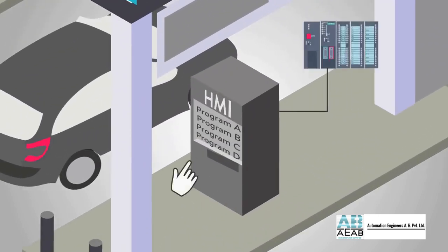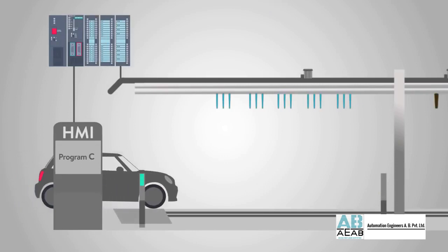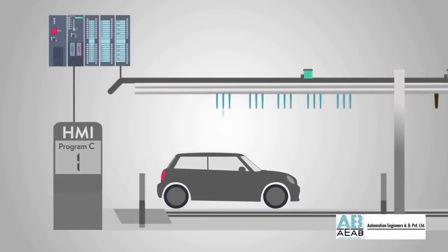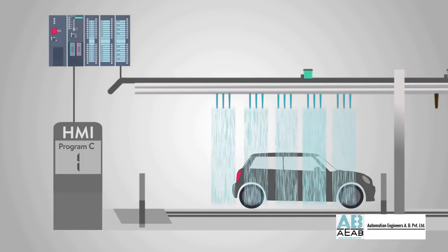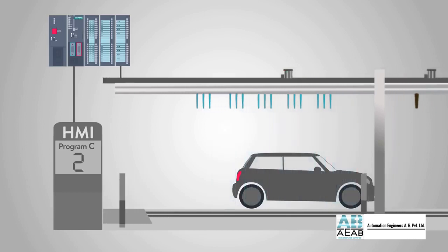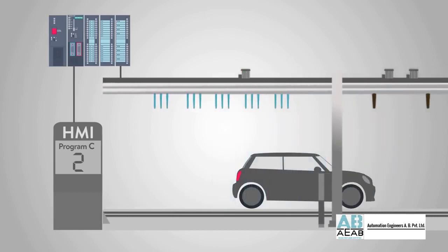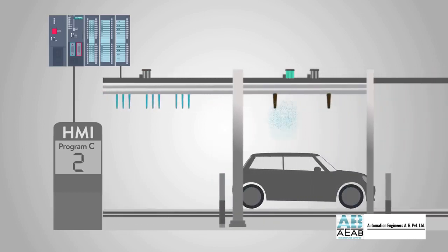Once you select your type of wash, that input will run the same program on the controller. Next, you drive forward until a sensor is flagged, starting the wash cycle, and another sensor tells the driver to stop. From there, the wash will continue through the cycle that the controller is running.